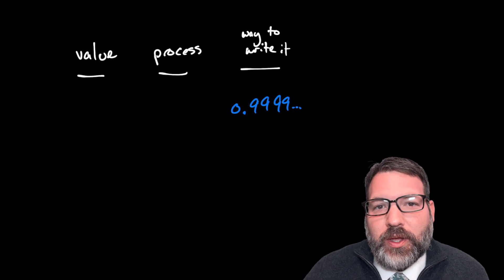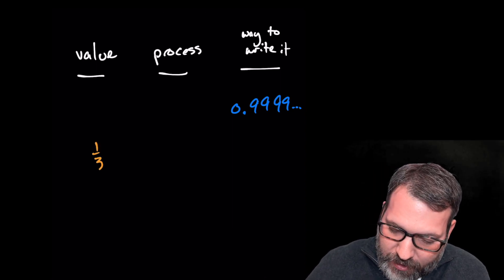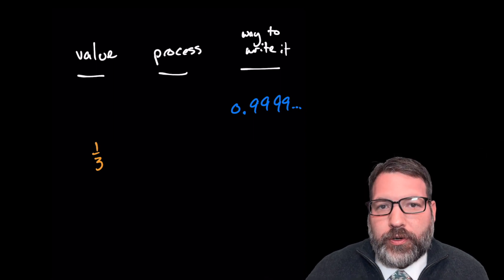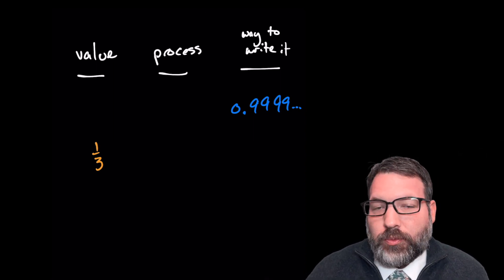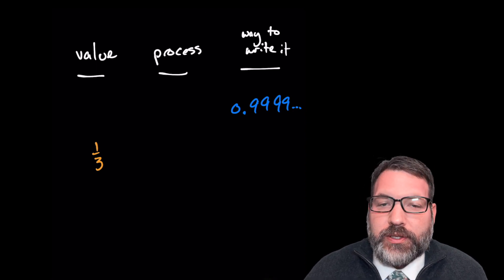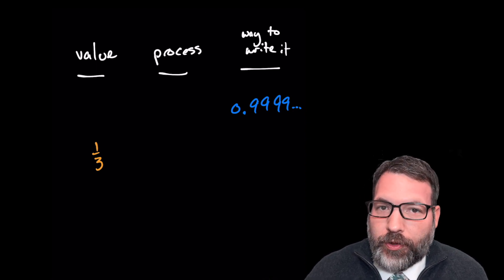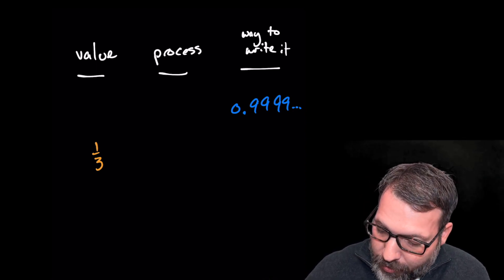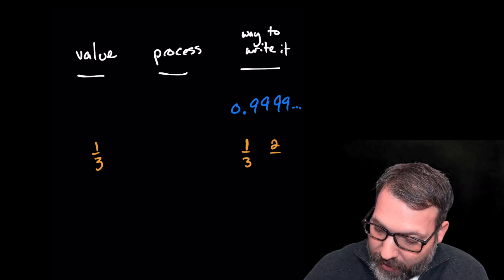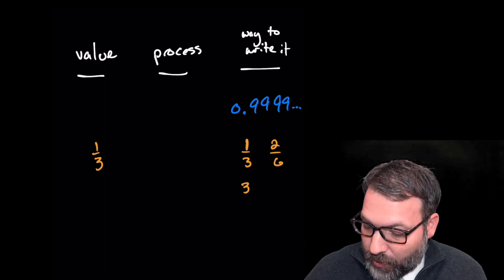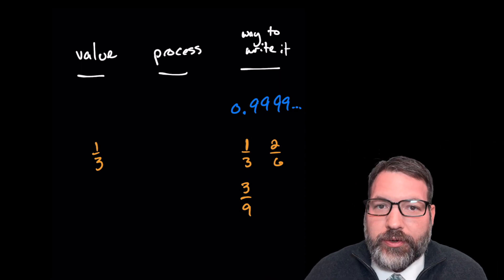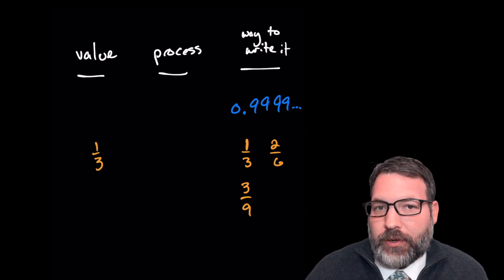So let's switch to something where it is really clear. Let's talk for a second about one-third. The value one-third just is one-third. It's a rational number — it's the ratio of one to three, or the fraction one-third. There are lots of ways to write one-third down: we could write it as one-third, two over six, three over nine. There are several different ratios that also work out to one-third.